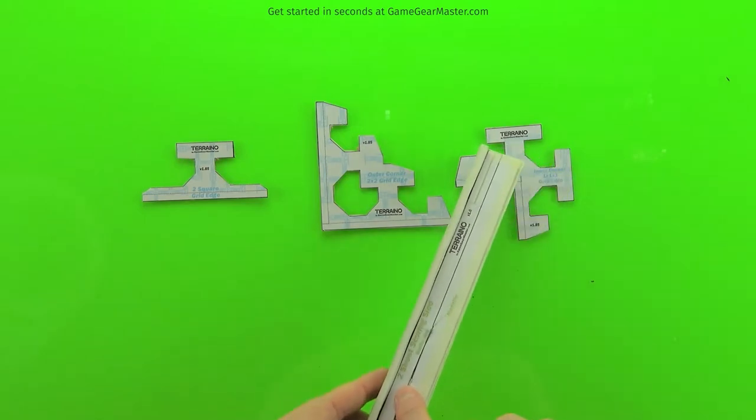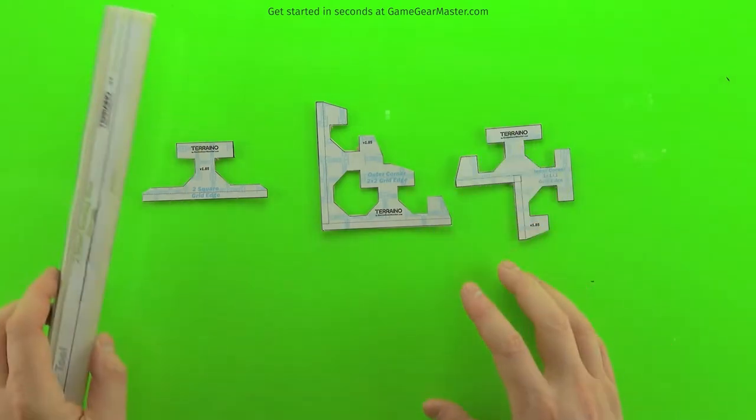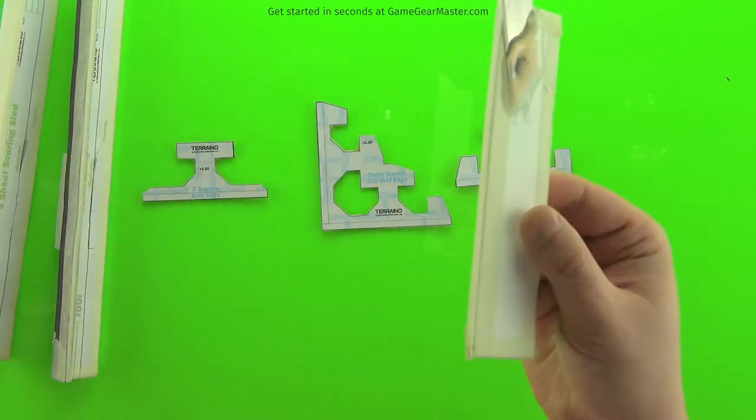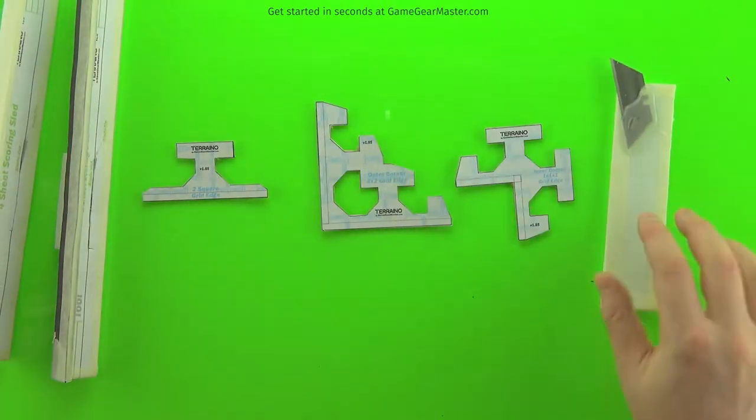You're going to need a couple tools: a two sheet scoring sled and the four sheet scoring sled. You're also going to need your depth cutter that you made in the grid connectors video.